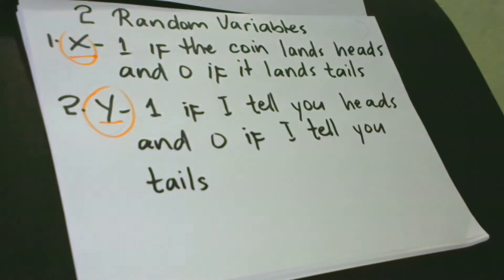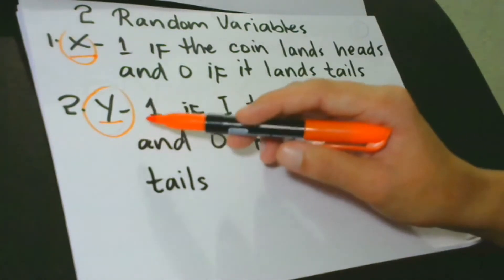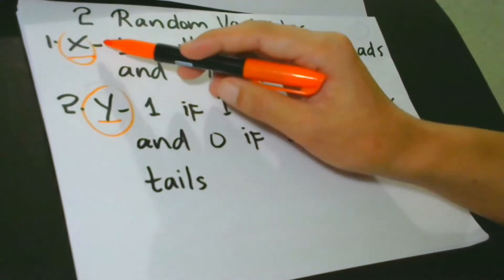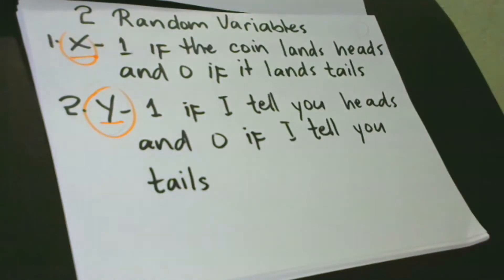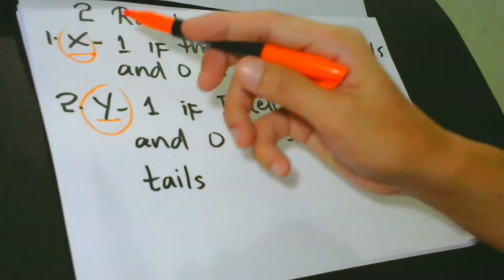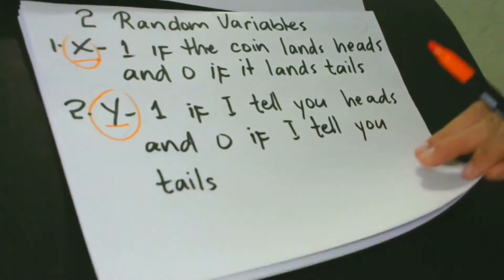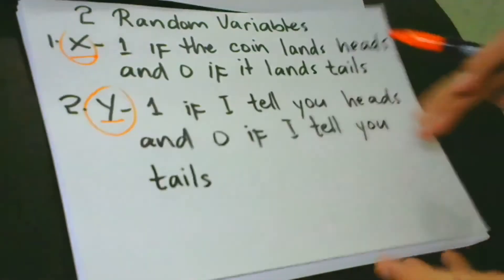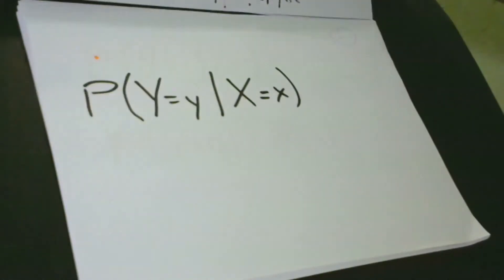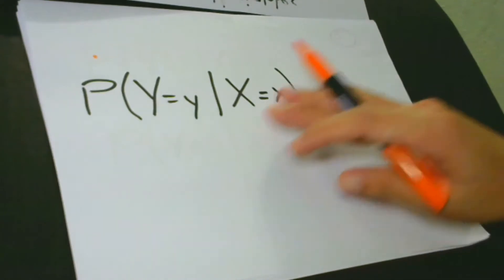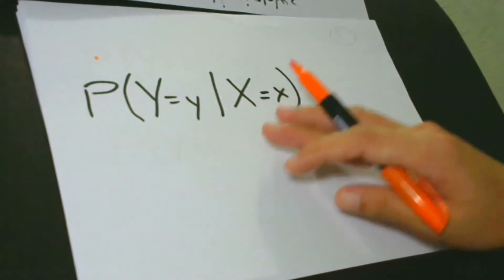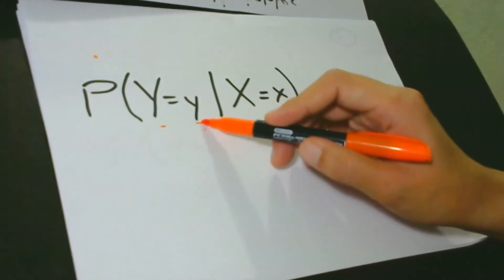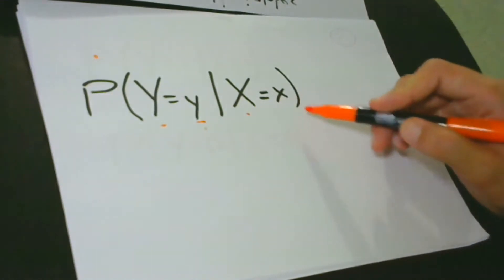Let's assume that I am honest and not acting strange. Considering these situations, we can use conditional probabilities to describe the probability that Y takes a certain value given that X has taken a particular value — in short, what would be the value of Y given that X has already taken place? This can be written as a mathematical expression: the probability that Y has the outcome small y given that X has the outcome small x.